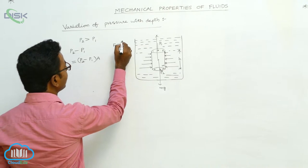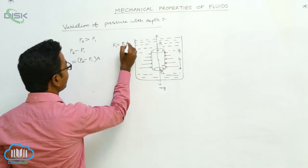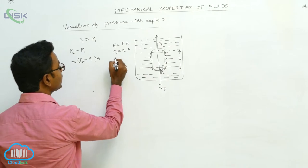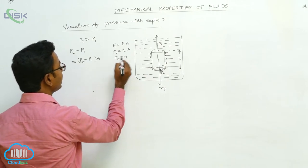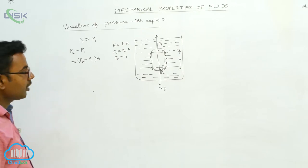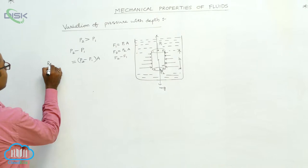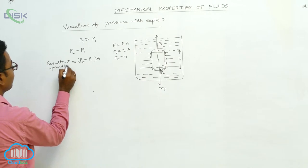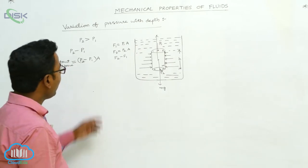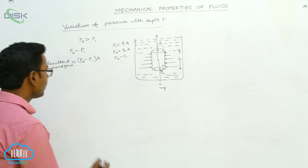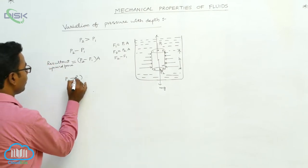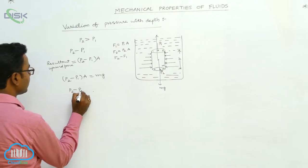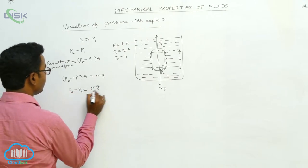The force acting on the top face is F1 = P1 × A, and the force acting on the bottom surface is F2 = P2 × A. The resultant force is F2 minus F1, which equals (P2 minus P1) × A. This is the resultant upward force acting on the cylindrical part, and it is balanced with the downward force Mg. So we write: (P2 − P1) × A = Mg, which gives P2 − P1 = Mg/A.